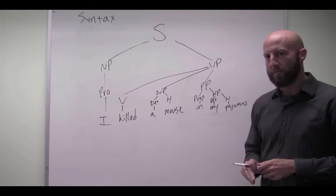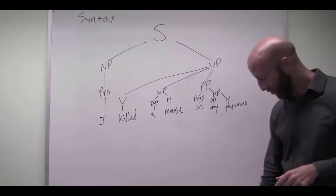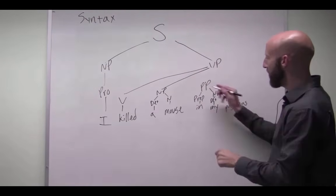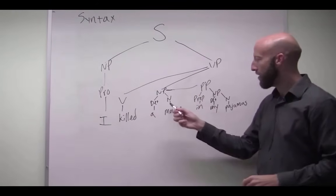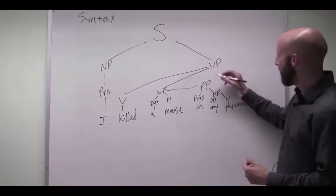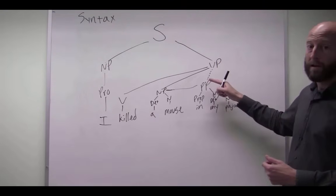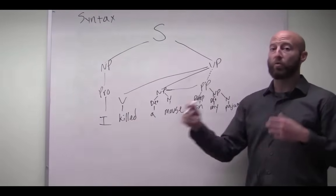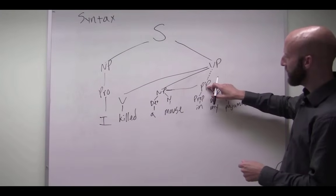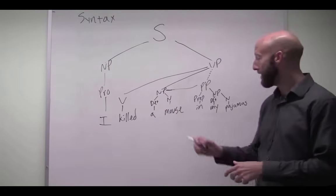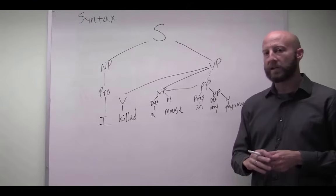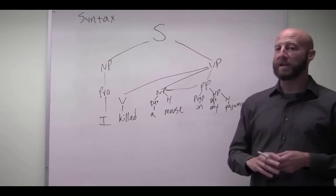But what if, for example, the mouse happened to be in the pajamas, whether it was crawling up your pant leg, and you smushed it, or it was on the floor? Well, in that case, we can't draw that prepositional phrase there. Instead, it has to be drawn here, because it's now describing a property of the mouse, where that mouse is located. So again, with this meaning here, with the dotted line, it represents that I, as the speaker, was wearing the pajamas when I killed the mouse. But if you're drawing the line from the prepositional phrase to the noun phrase here, it means that the mouse was in my pajamas when I killed it. So that's how you can structurally disambiguate two possible meanings from the same exact sentence.